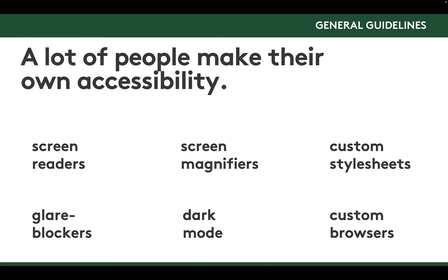Realize that no matter what you do with your graphic design, a lot of people make their own accessibility, especially online. You have people using screen readers, glare blockers, screen magnifiers, custom browsers, custom style sheets, and dark mode — these are all things that can change the way people perceive your design. They're giving people more choices and options for accessing your design. But the point is that you can plan for a majority of accessibility situations, but your design is going to be consumed in ways you might not realize or have intended.